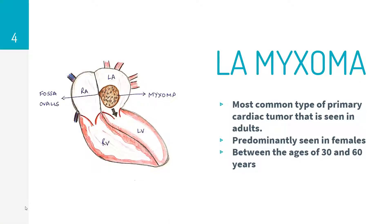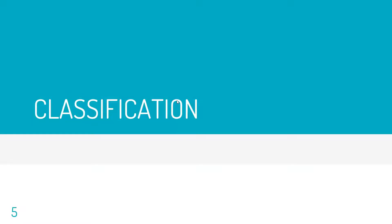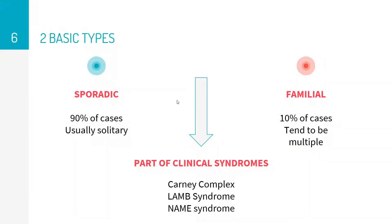Here is a line diagram of a myxoma. The left atrial myxoma is the most common type of primary cardiac tumor seen in adults, predominantly in females between the ages of 30 and 60. Broadly classified, there are sporadic and familial types. 90% of cases are sporadic and usually present as solitary masses, whereas familial cases account for about 10% and tend to be multiple.